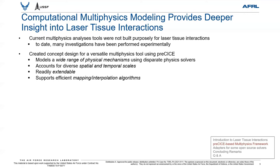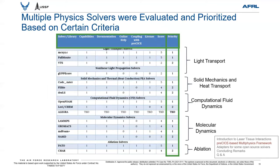In order to accomplish this, a number of single-physics solvers were chosen and some adapters were written to couple them all with PreSize. As seen in this table, the project team evaluated a number of open-source physics solvers and prioritized them based on criteria including capabilities, quality of documentation, online health, whether the solver is already coupled with PreSize, and licensing flexibility. Final scores are shown for each solver in the light transport, solid mechanics and heat transport, CFD, molecular dynamics, and ablation categories. For light transport, we chose two open-source solvers: MCXYZ.C and Full Monte as top priority. We also chose a nonlinear optics solver called GF-Core, and for CFD we chose OpenFOAM and Loci-Chem. The idea is to first focus on top priority solvers, but eventually bring the lower priority ones into PreSize as well.